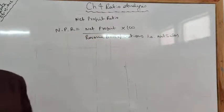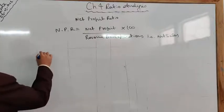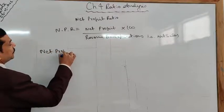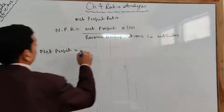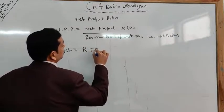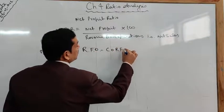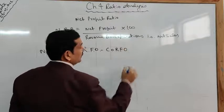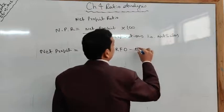You may have studied 'net sales' last year, but in company accounts after the 2013 amendment, it is called revenue from operations. Now, how to calculate net profit? Net profit equals revenue from operations minus cost of goods sold (COGS) minus operating expenses.